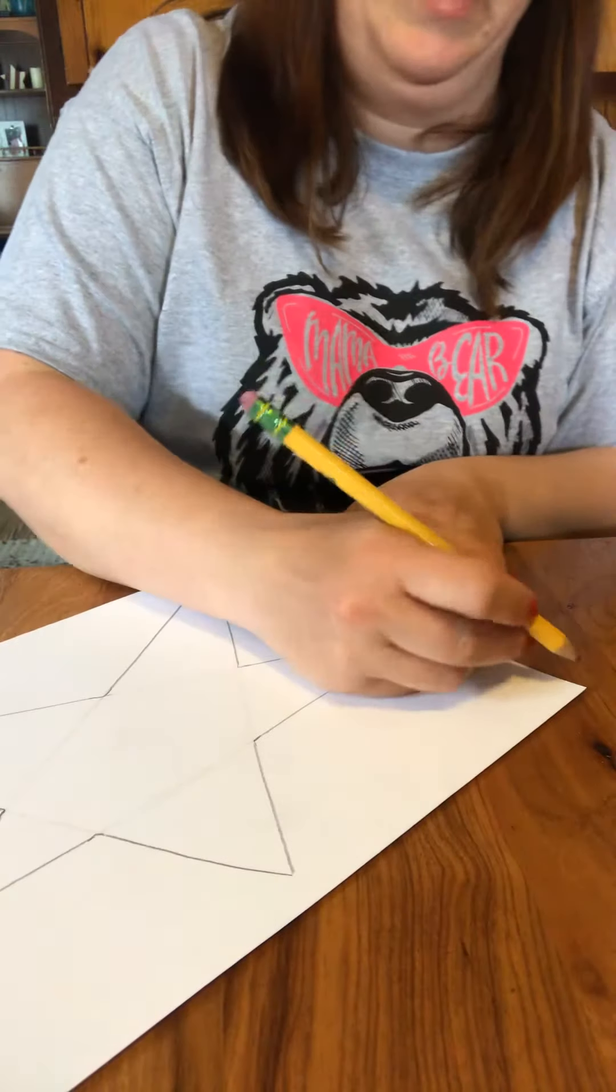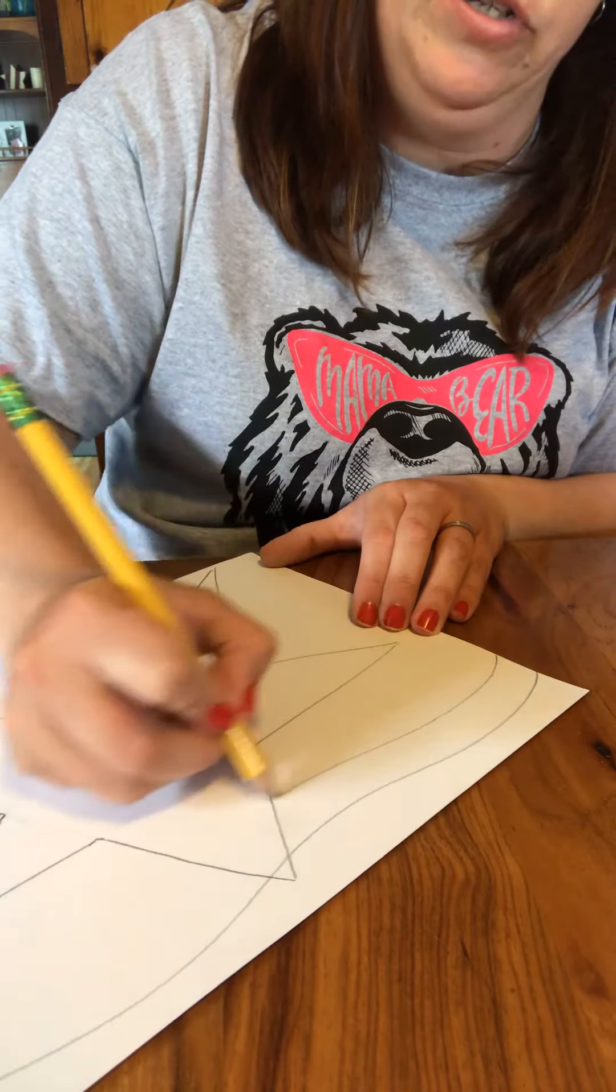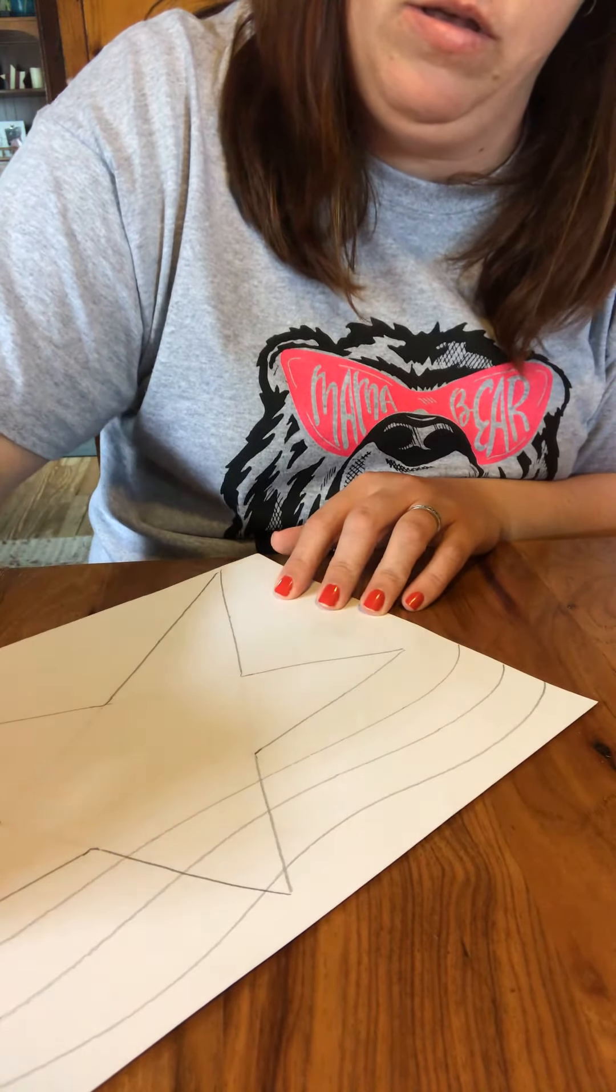You can make them curved to look like the flag is waving. And you're going to start at the top and you're just going to go right on top of your star. Like this.